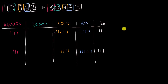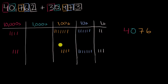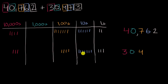Now let's just rewrite this number up here. This is four 10,000s, so this is 40,000. I have zero thousands right over there. And then I have seven hundreds, six tens, and two ones — I'm just rewriting the number. And then this one down here: I have three ten-thousands, zero thousands, four hundreds, seven tens, and three ones.